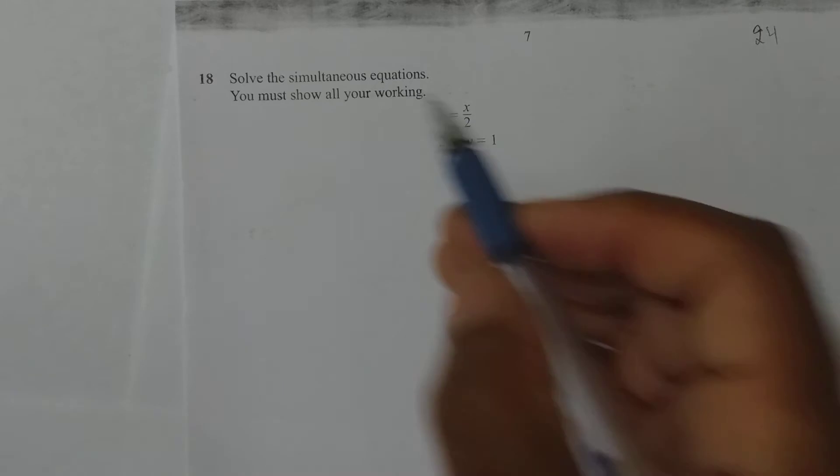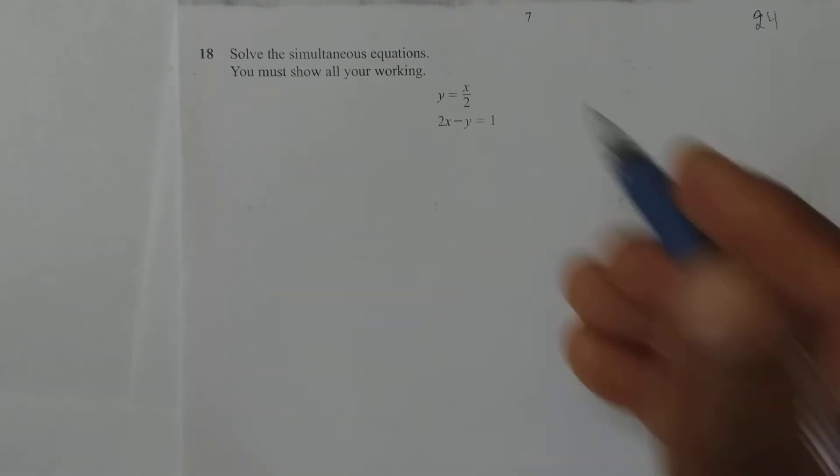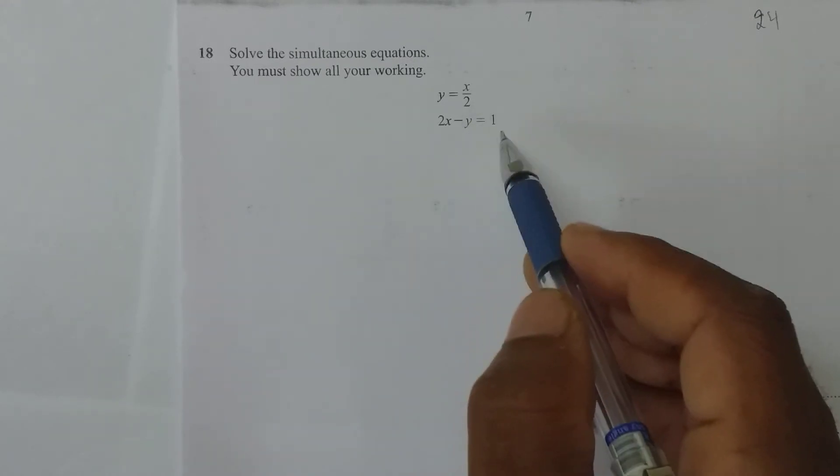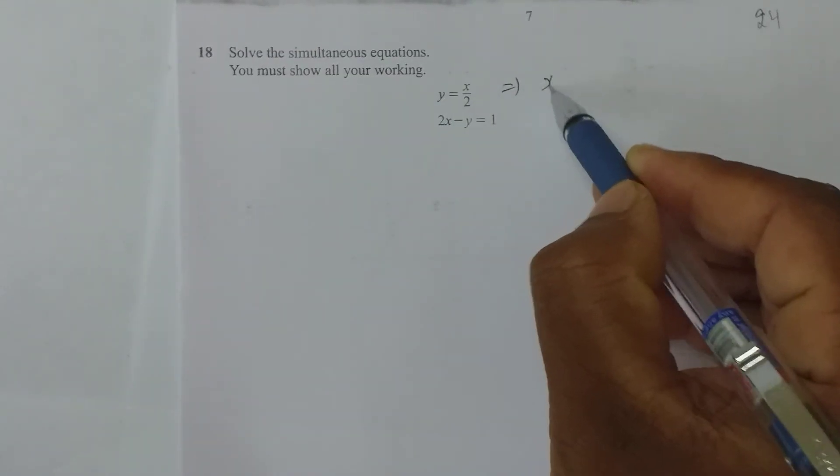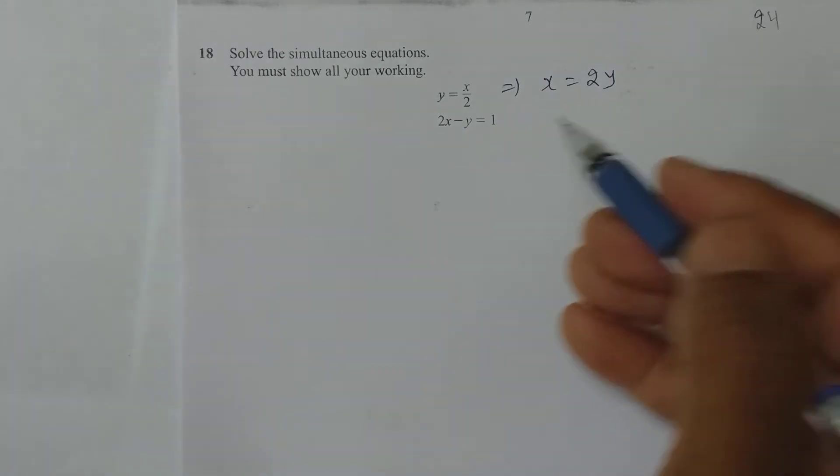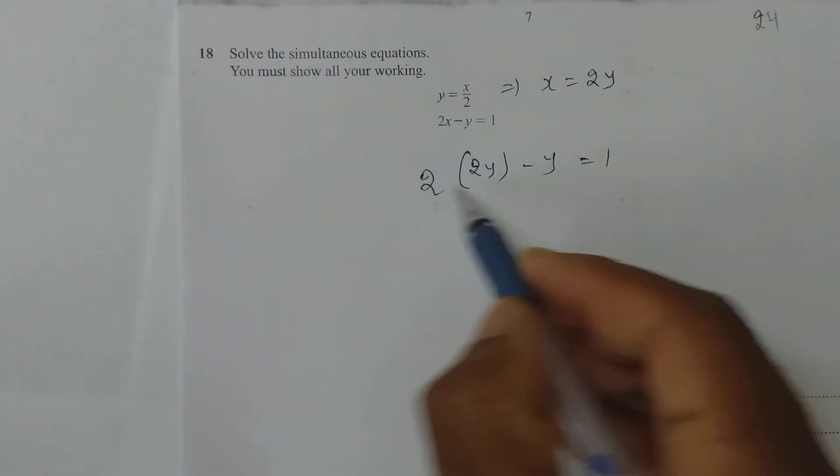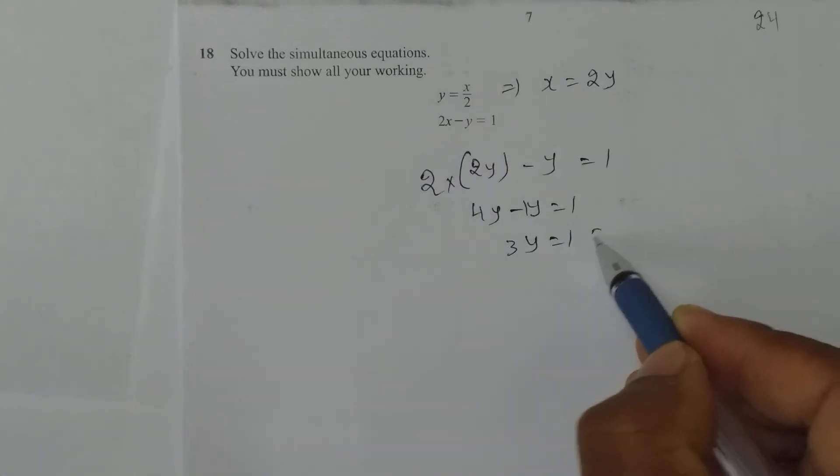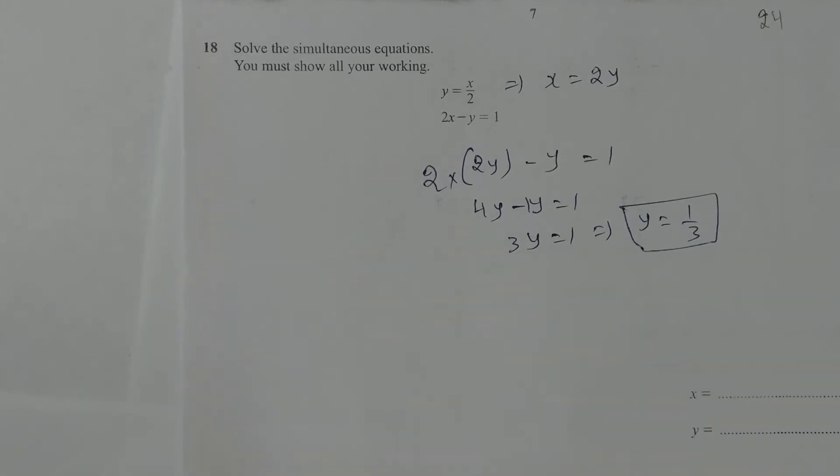Next question. Solve the simultaneous equations. You must show all your working. y = x/2 and 2x - y = 1. If I send 2 to the other side, x becomes 2y. Now if I replace x by 2y here: 2(2y) - y = 1. 4y - y = 1, so 3y = 1. That makes y = 1/3.